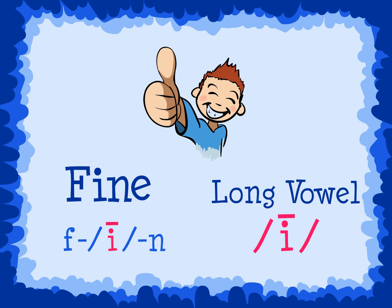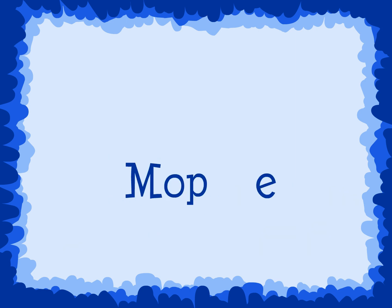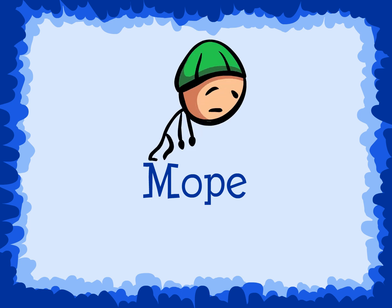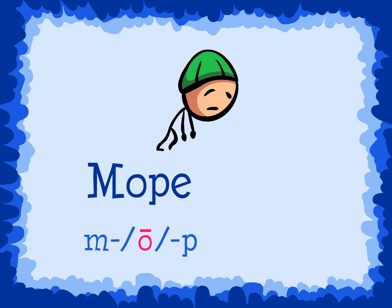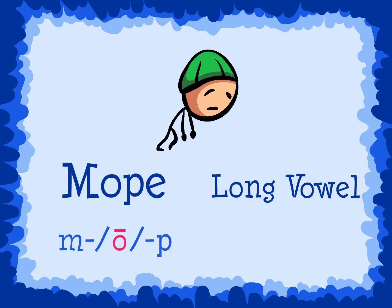Let's try another one. If we add an E to the end of the word 'mop,' we would get the word 'mope.' Each letter in the word 'mope' is pronounced M, O, P. We don't pronounce the E at the end. We only change the way that we pronounce the O. O is the long vowel sound for the vowel O.